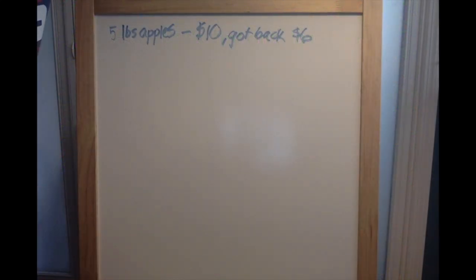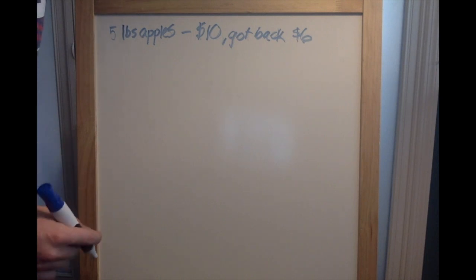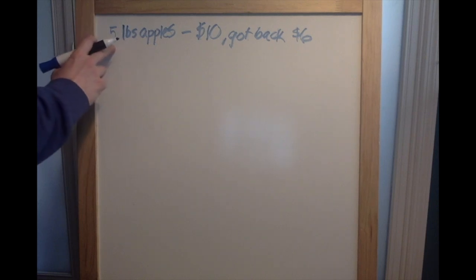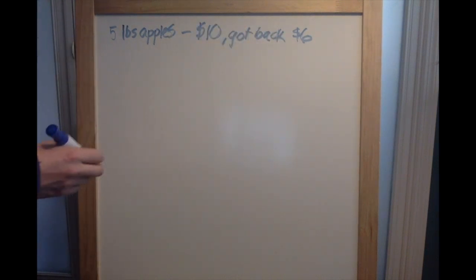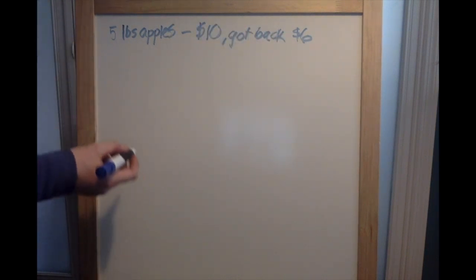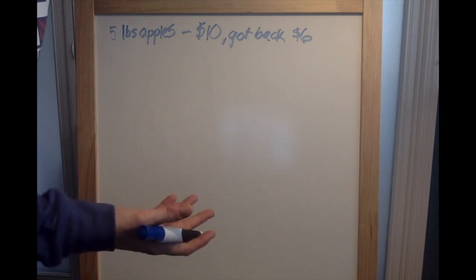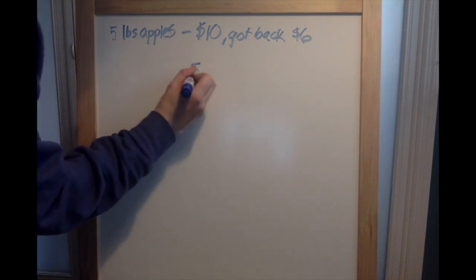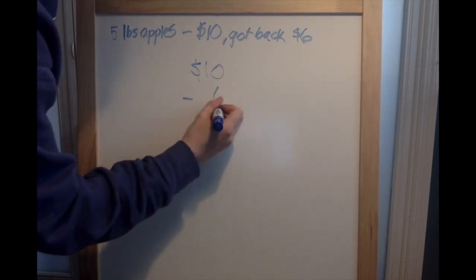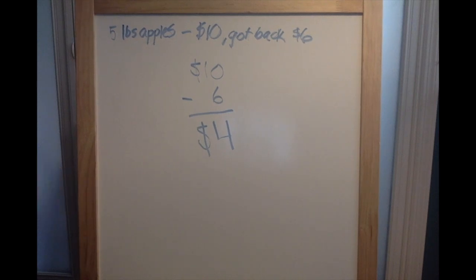Our first problem says: Carlos got paid for five pounds of apples with a ten dollar bill. He got back six dollars. What was the cost of each pound of apples? We already know that he bought five pounds of apples. He paid with a ten dollar bill and he got back six dollars. We need to take this in a couple of steps. The first step is we need to figure out how much did Carlos actually pay. If he gave the cashier a ten dollar bill but he got six dollars back, he didn't actually pay ten dollars. He actually paid ten dollars minus six dollars, which tells us he actually paid four dollars for all of his apples.